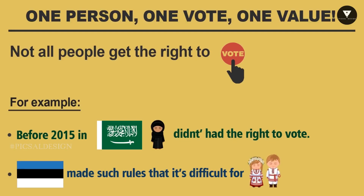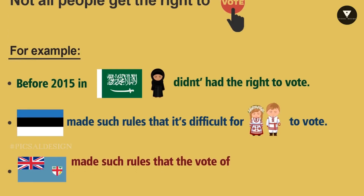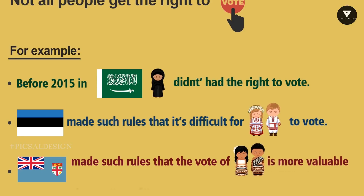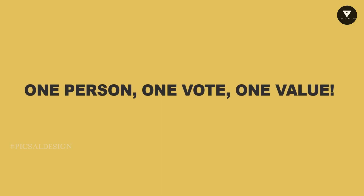Estonia has made its citizenship rules in such a way that people belonging to the Russian minority found it difficult to get the right to vote. In Fiji, the electoral system is such that the vote of an indigenous Fijian has more value than that of an Indian Fijian. The feature of democracy these examples highlight is that each adult citizen must have one vote and each vote must have one value.